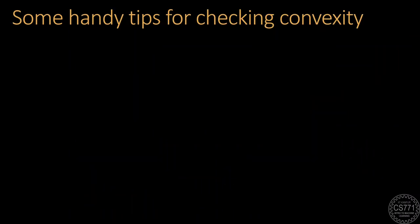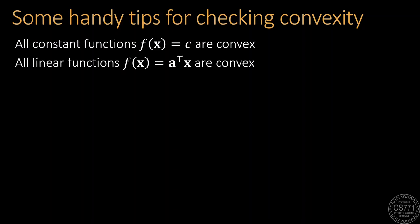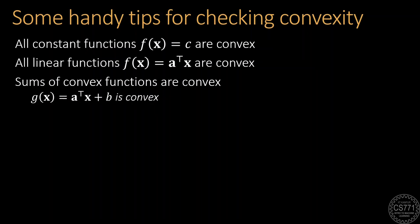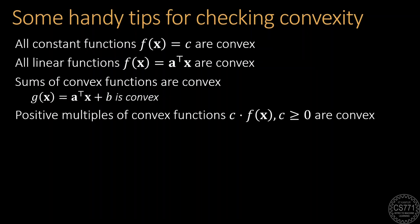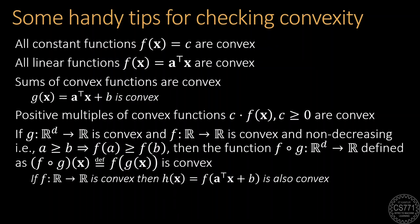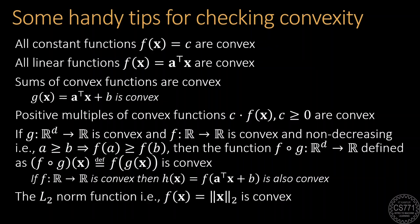There are several ways that make it easy to check whether a function is convex or not instead of doing the calculations from scratch. For example, all constant functions are convex. All linear functions are convex. The sum of two convex functions is always convex. Positive multiples of convex functions are always convex. Combining a convex function with a convex non-decreasing function always gives us a convex function. And some of the norms that we saw, for example, the Euclidean norm, the L2 norm or the L1 norm are also convex functions. You can try proving some of these results yourselves from first principles as an exercise.